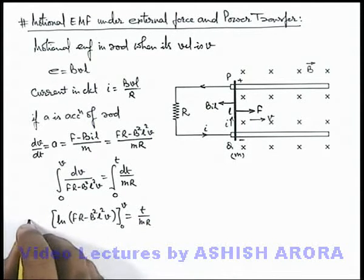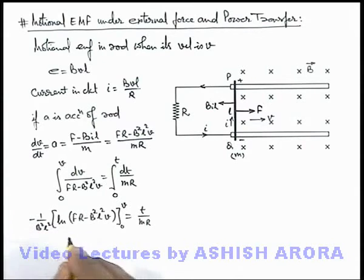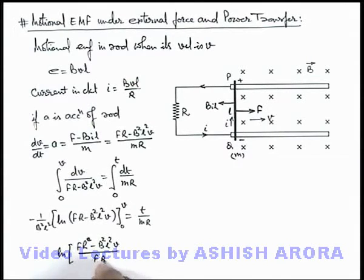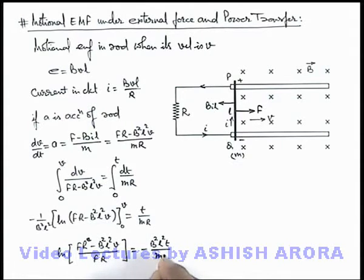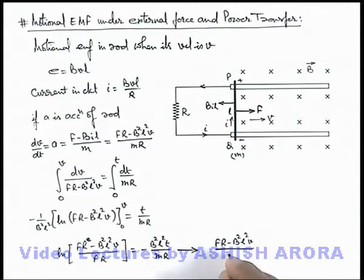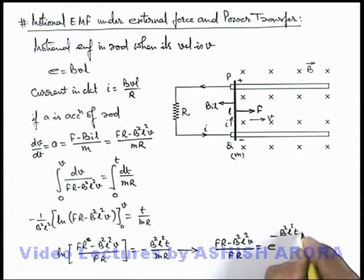There is a term of minus 1 over B²L² from the integration. On substituting the limits, we get: ln of (FR minus B²L²v over FR) equals negative B²L²t over mR. Further simplifying by taking the natural exponential on both sides: (FR minus B²L²v) over FR equals e to the power of minus B²L²t over mR.